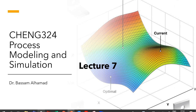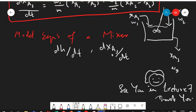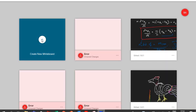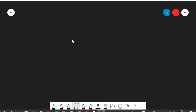Bismillahirrahmanirrahim. This is lecture number seven for Process Modeling and Simulation, Chemical Engineering 304, by Dr. Bassam Al-Hammar. Today we are going to take the modeling of a surge tank.